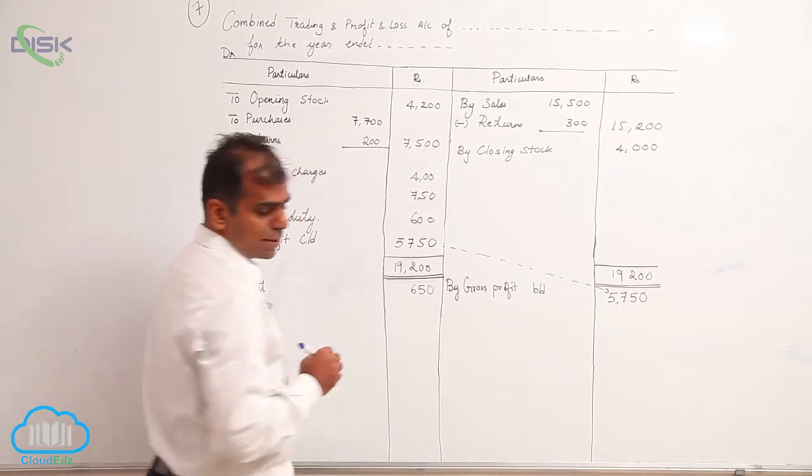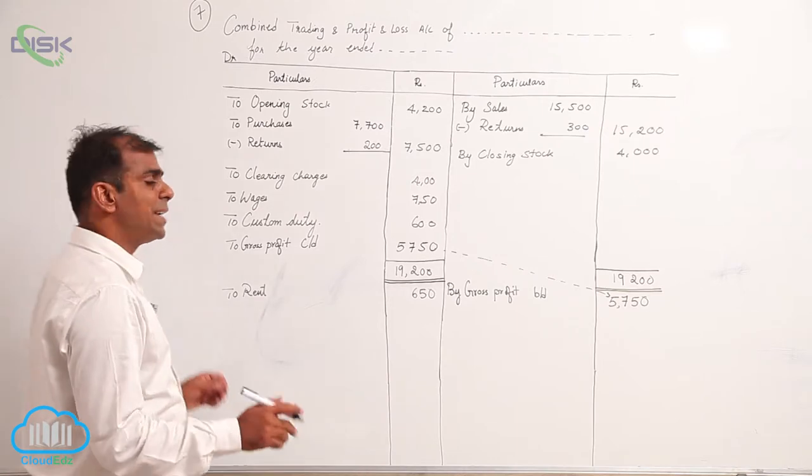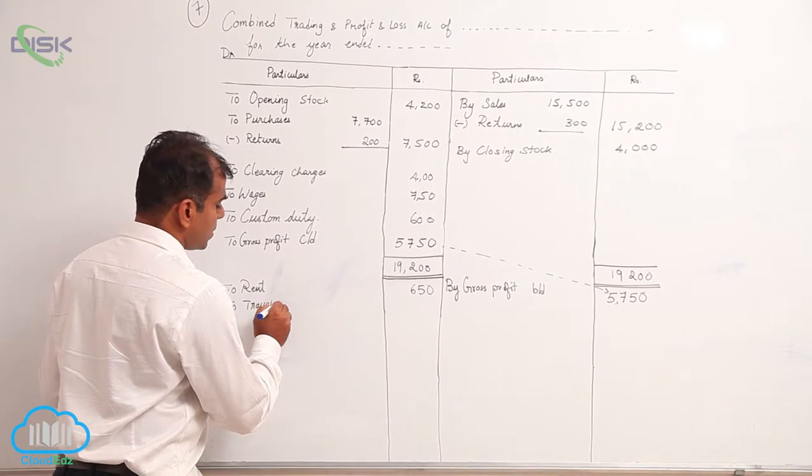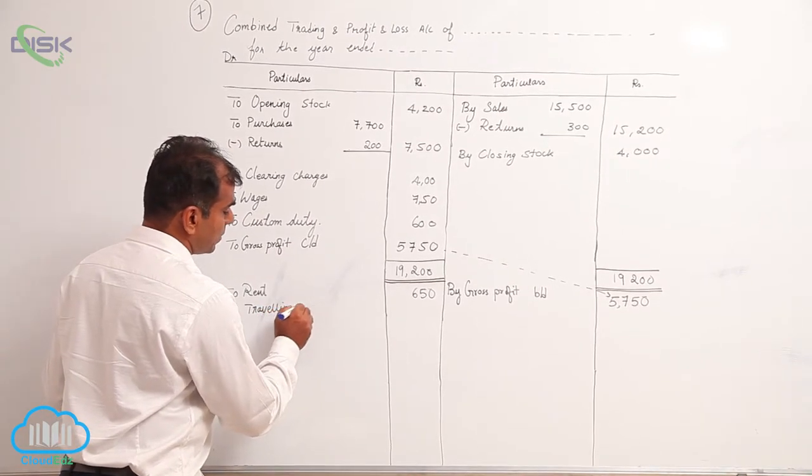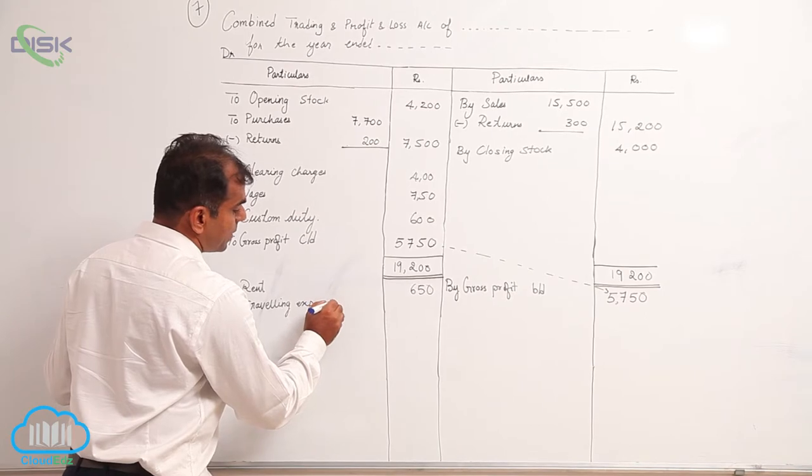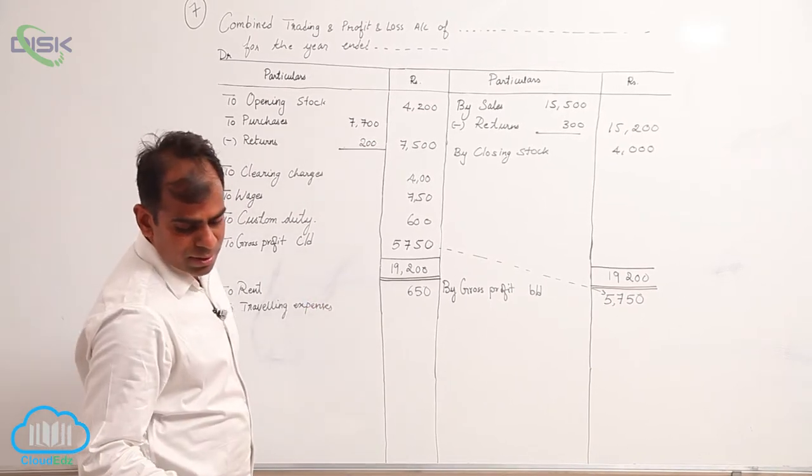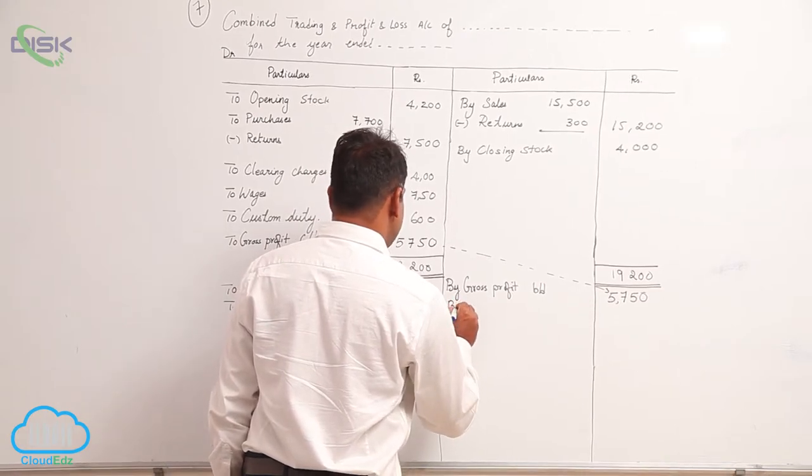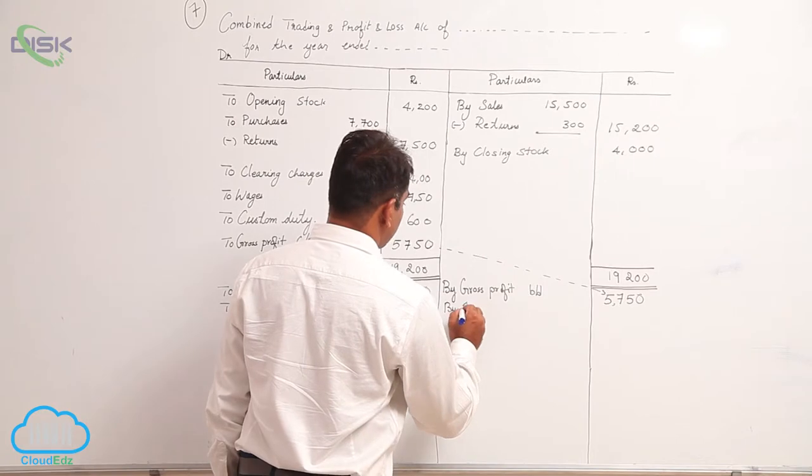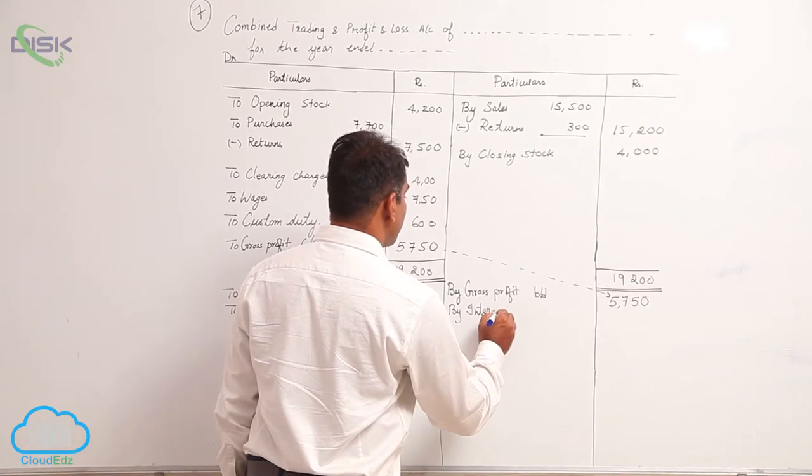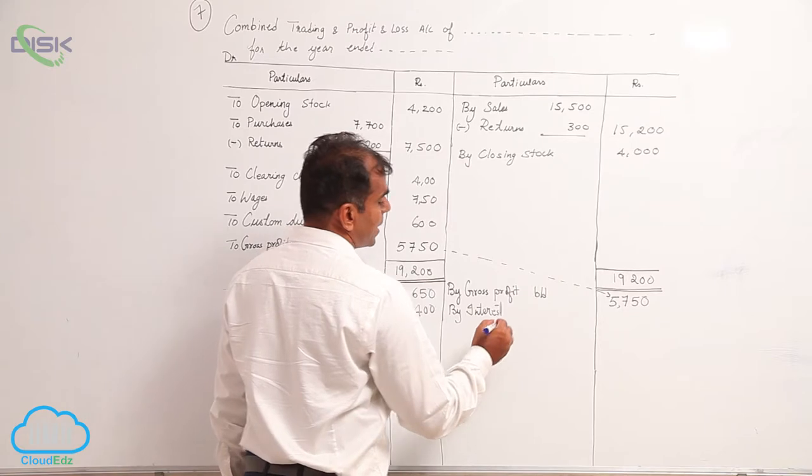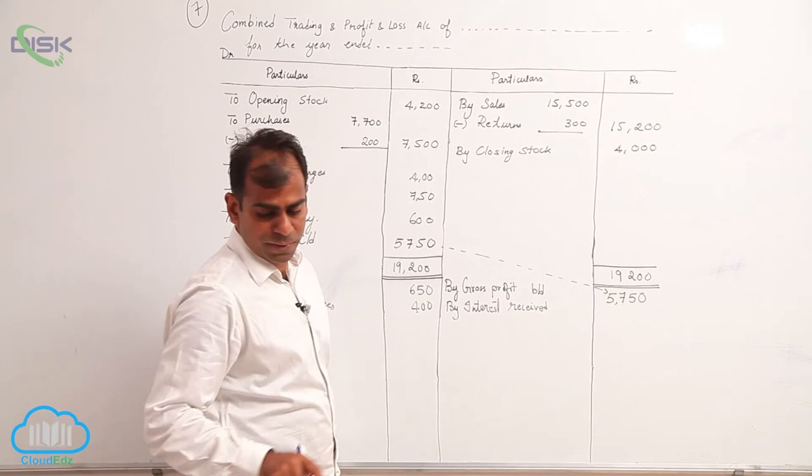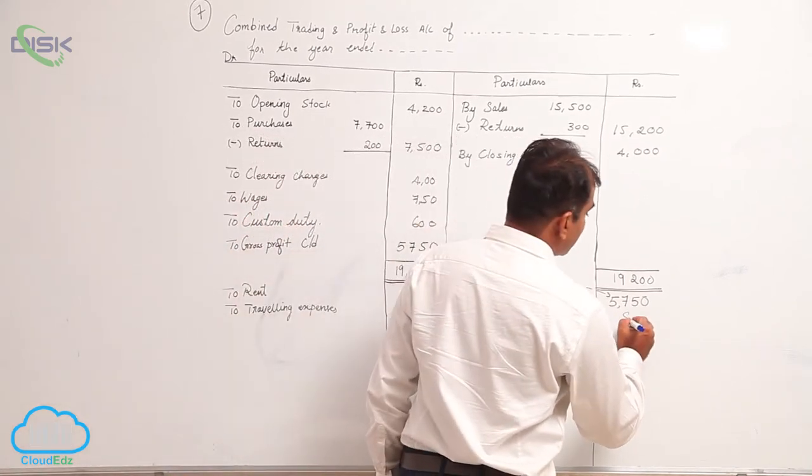Then we have travelling expenses, the amount is 400. Next is given as interest received. Interest received is an indirect income, so we take it on the credit side because it is income. Interest received, the amount of rupees 800.